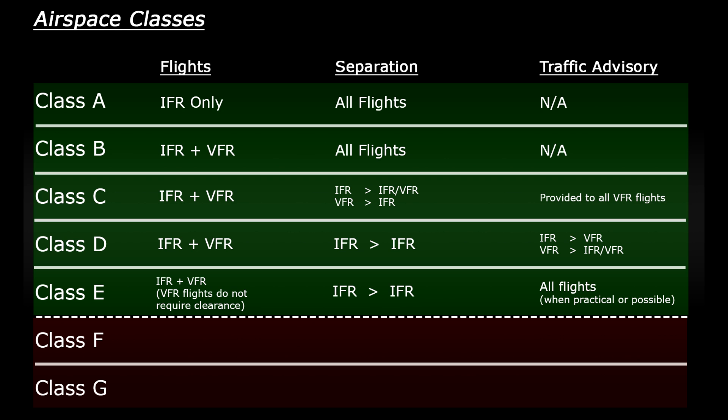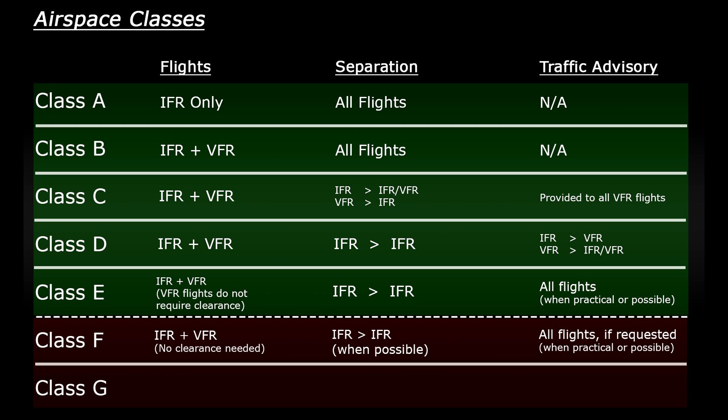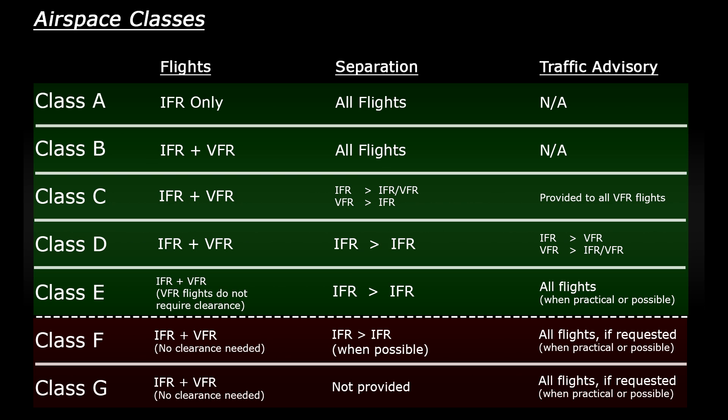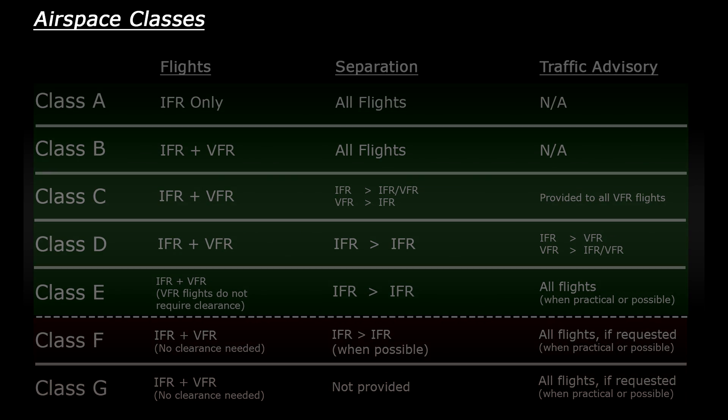In class F, IFR and VFR flights are allowed with no prior clearance. IFR flights may be able to receive a separation service if it's available, and all flights can request traffic or information services — the key word being 'request.' ATC in uncontrolled airspace won't instigate much communication; they're only there if pilots request information. In class G, IFR and VFR flights are allowed and only an information or traffic advisory service is provided, if it's even available.